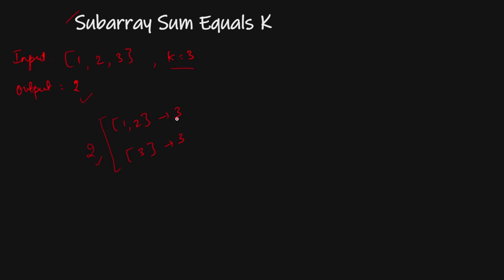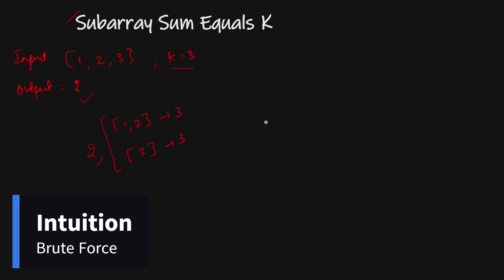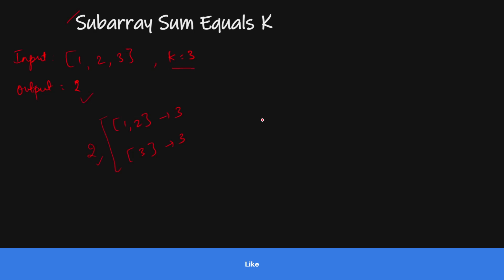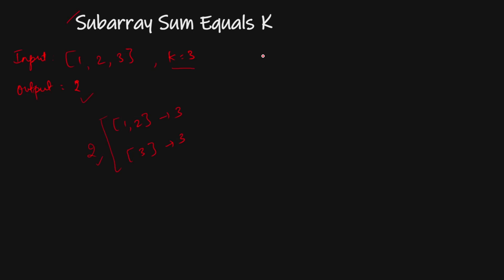The very first solution that comes to mind is a brute force approach, where we find all the subarrays and check if the subarray sum equals k or not. If it equals k, we update our answer, otherwise not. We initialize our answer to zero.